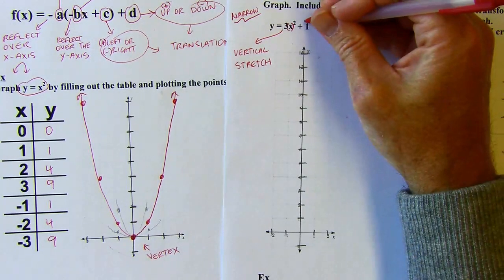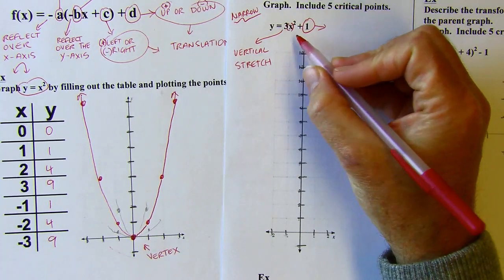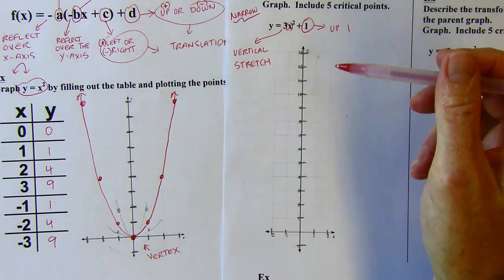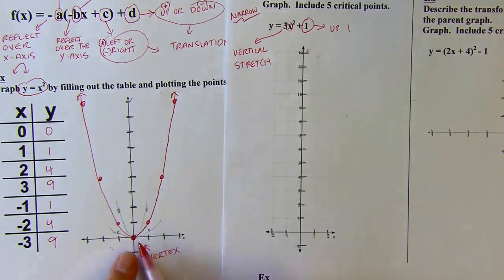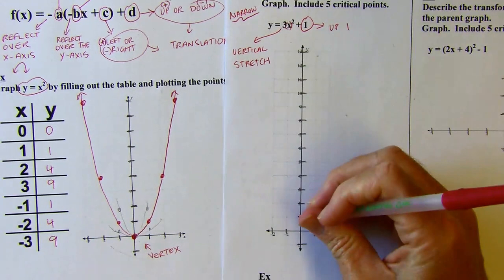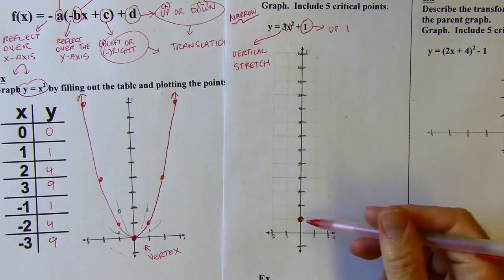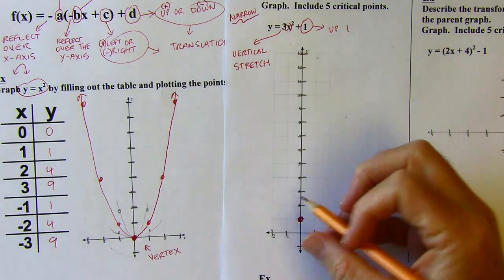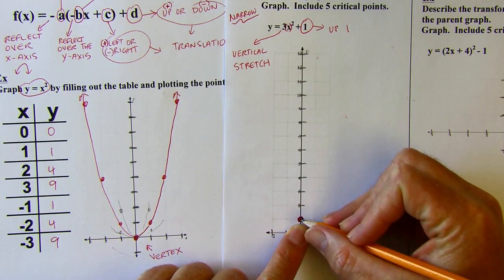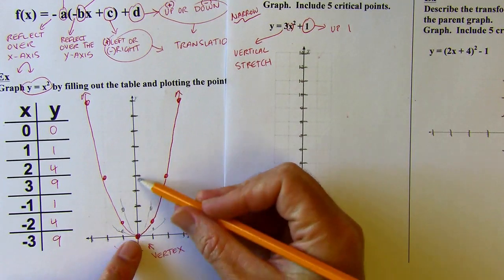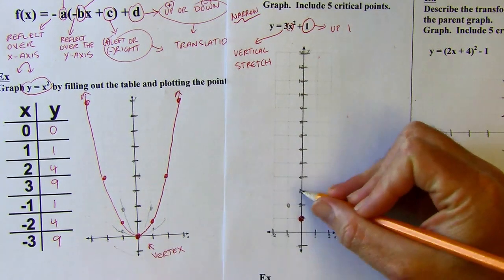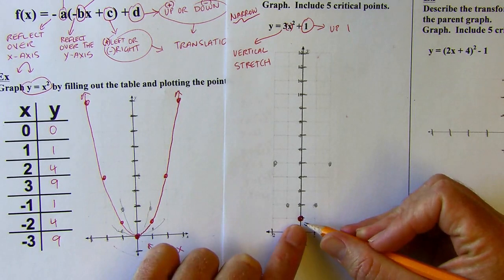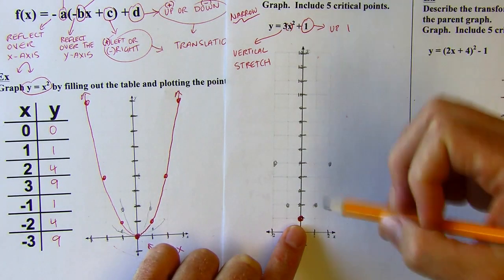Using transformations rather than an XY table: on the parent graph the vertex is at (0,0), and since we're shifting up one, my new vertex is at (0,1). I'll draw in ghost points — if there were no stretch, I'd go up 1 to the right 1, up 1 to the left 1, then up 4 to the right 2, and up 4 to the left 2 from the vertex. This shows what it would look like shifted up one without the factor of three.